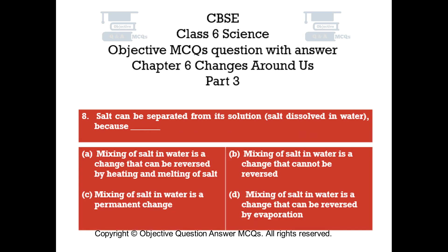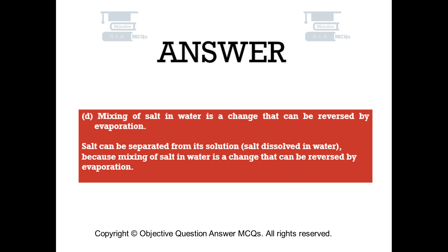Question number 8. Salt can be separated from its solution (salt dissolved in water) because: Option A, mixing of salt in water is a change that can be reversed by heating and melting of salt. Option B, mixing of salt in water is a change that cannot be reversed. Option C, mixing of salt in water is a permanent change. Option D, mixing of salt in water is a change that can be reversed by evaporation. The right answer is option D — mixing of salt in water is a change that can be reversed by evaporation.